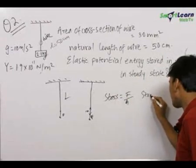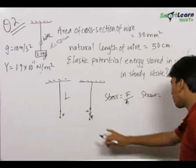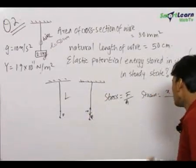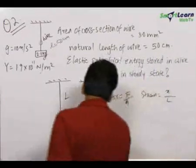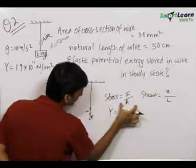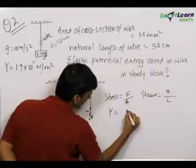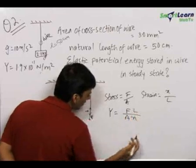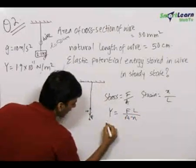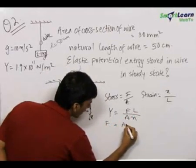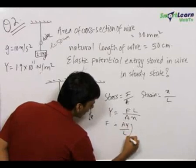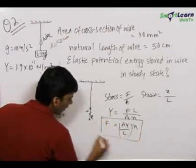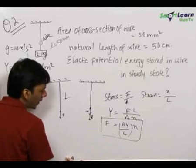The strain equals change in length x upon original length L. Young's modulus can be written as stress upon strain, that is (F/A) upon (x/L). Therefore F = (AY/L) · x. We see here that force is directly proportional to x.